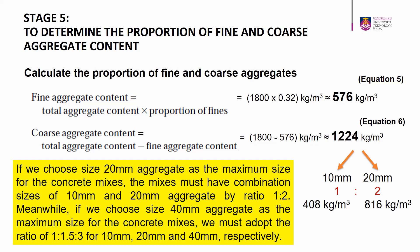The coarse aggregate content is 1,800 − 576 = 1,224 kg/m³. For a maximum aggregate size of 20 mm, the mix must combine 10 mm and 20 mm aggregate in a ratio of 1 to 2. For 40 mm maximum size, the ratio is 1:1.5:3 for 10 mm, 20 mm, and 40 mm respectively. In this example, with 20 mm maximum aggregate, the proportion for 10 mm aggregate is 408 kg/m³ and the proportion for 20 mm aggregate is 816 kg/m³.